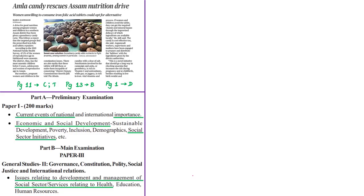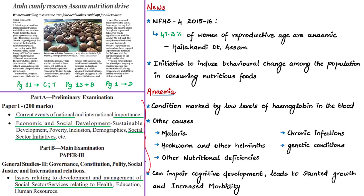This news article discusses a step taken in Assam to induce behavioral change among the population in consuming nutritious foods. Women and children in Hailakandi district of Assam are suffering from anemia. According to National Family Health Survey 4 of 2015-16, 47.2% of women of reproductive age in Hailakandi district were anemic. This district has the most anemic children below 5 years and the most anemic adolescents and women of reproductive age.